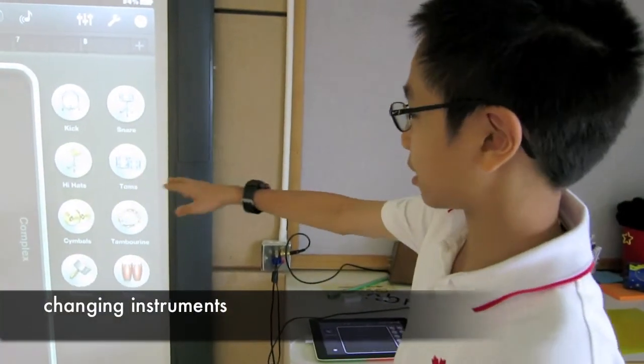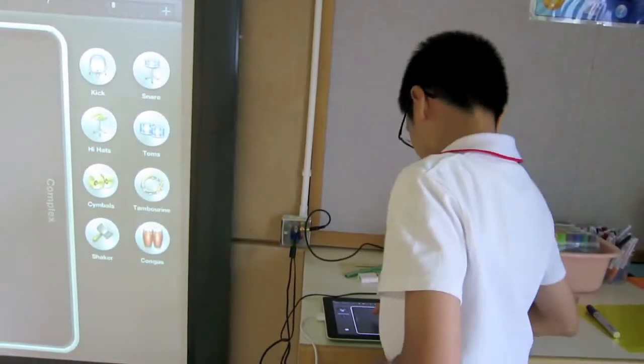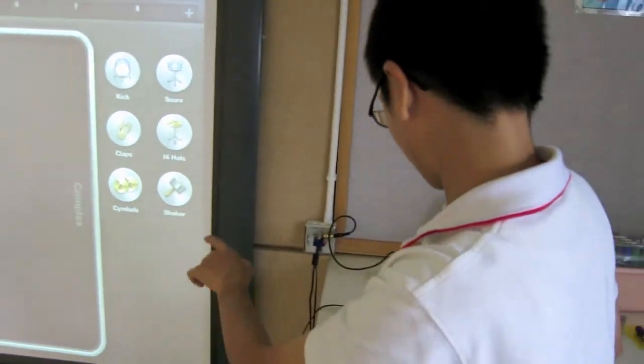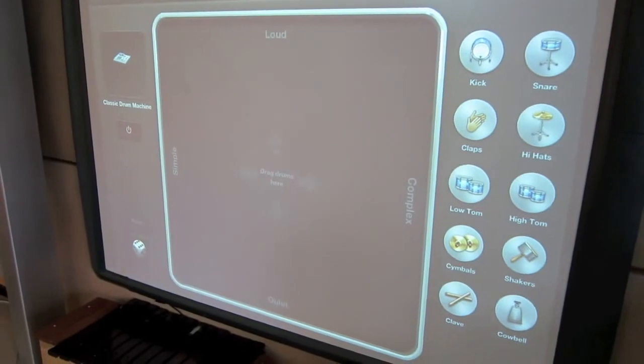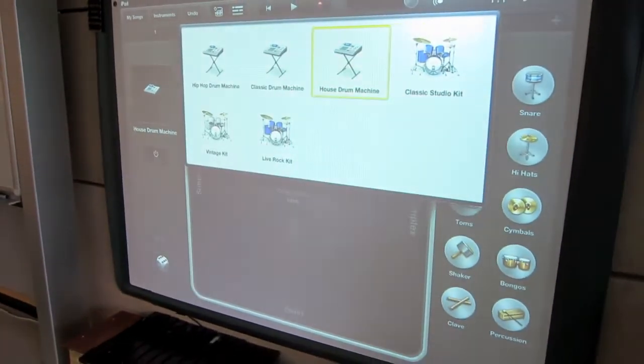But then every time you change the set of instruments, it deletes your track. So this is the basic one, like the one you started with, and this is the classic drum machine, and a house drum machine.